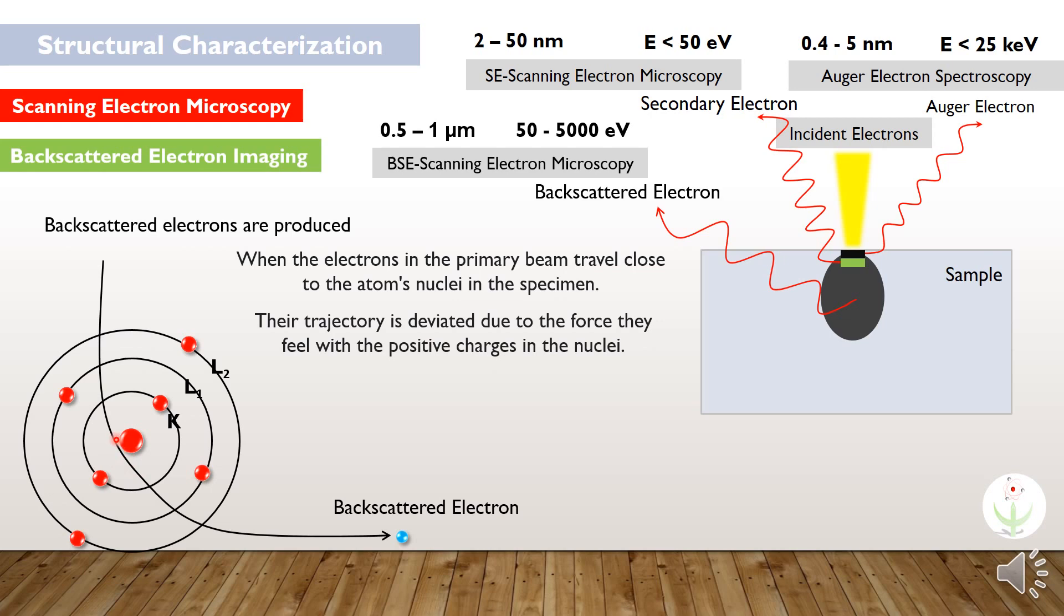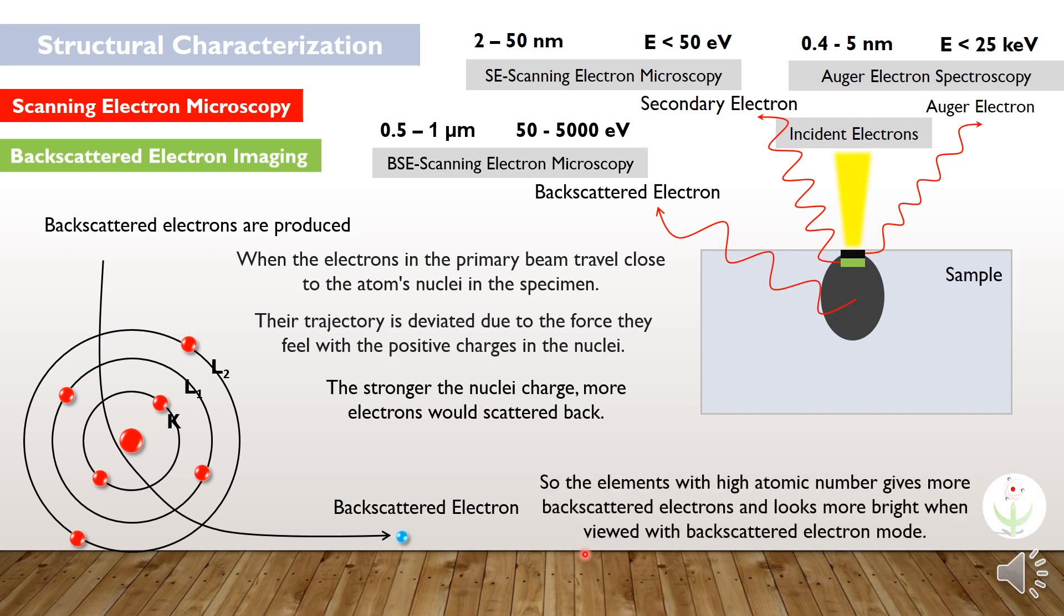These backscattered electrons are produced when the electrons in the primary beam travel close to the atom's nuclei. Their trajectory is deviated due to the force they feel with the positive charge in the nuclei. The stronger the nuclear charge, more electrons will scatter back. That is why elements with a high atomic number give more backscattered electrons and look more bright when viewed with the backscattered electron mode.